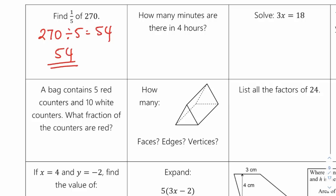How many minutes are there in four hours? Four hours times by 60 minutes, which is 240 minutes.